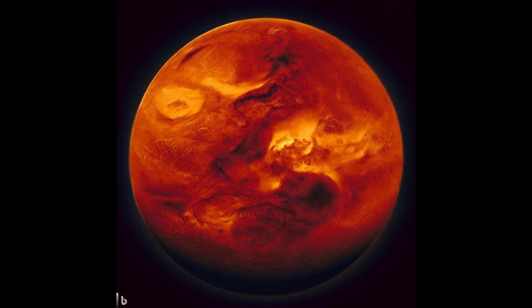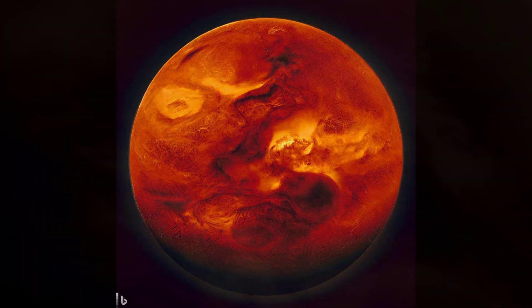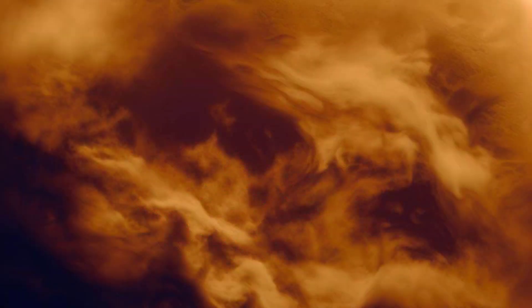Venus is the second planet from the Sun and the hottest planet in our solar system. It has a thick atmosphere made mostly of carbon dioxide that traps heat and creates a greenhouse effect. It has no moons and rotates in the opposite direction to most other planets.